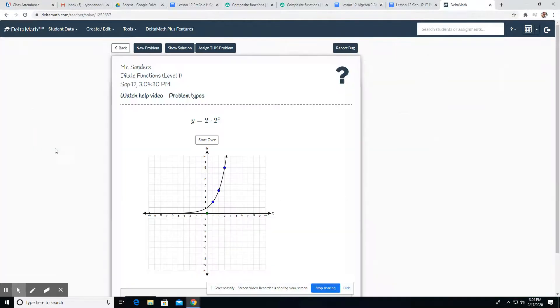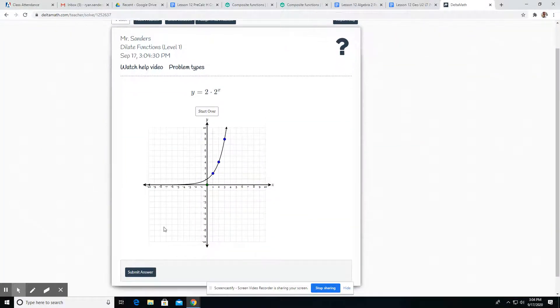Alright, dilate functions level one. In this case we have our parent function y equals a*b to the x. It's an exponential function, the x is where the exponent is at, and in this case we have